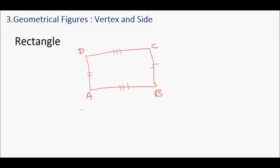There are four vertices: A, B, C, and D. The sides of the rectangle are AB, BC, CD, and AD. Opposite sides of a rectangle are of equal length and all angles of a rectangle are right angles. A rectangle is also called a right-angled quadrilateral.